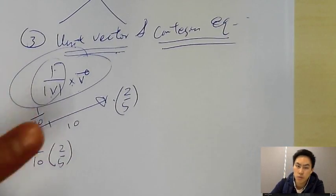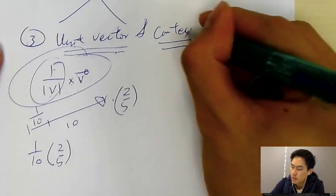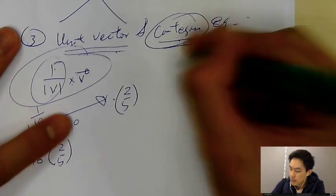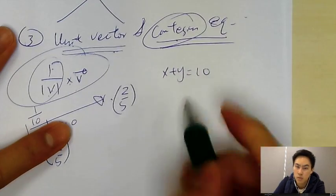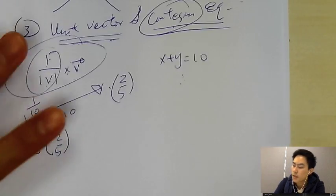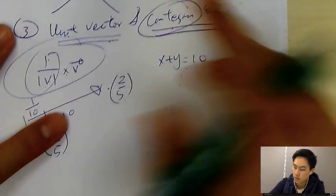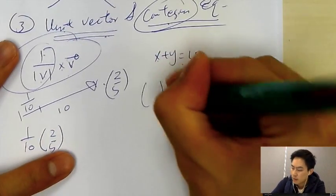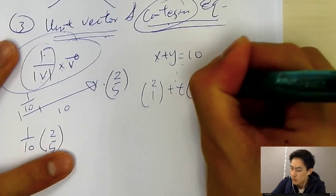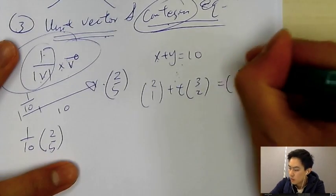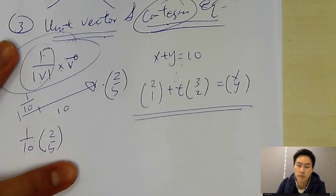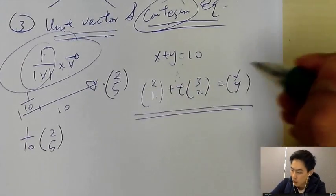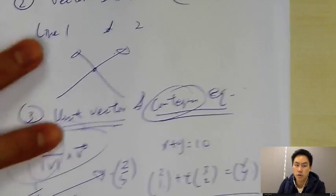For Cartesian equation, what does it mean? This word seems very complicated, but it's actually just talking about x plus y equals 10. This is what we call the Cartesian equation—x and y relationship. So how do you change it like 2, 1 plus t, 3, 2 to Cartesian equation? You need to know how to change the vector form to Cartesian form. This is the third question type.